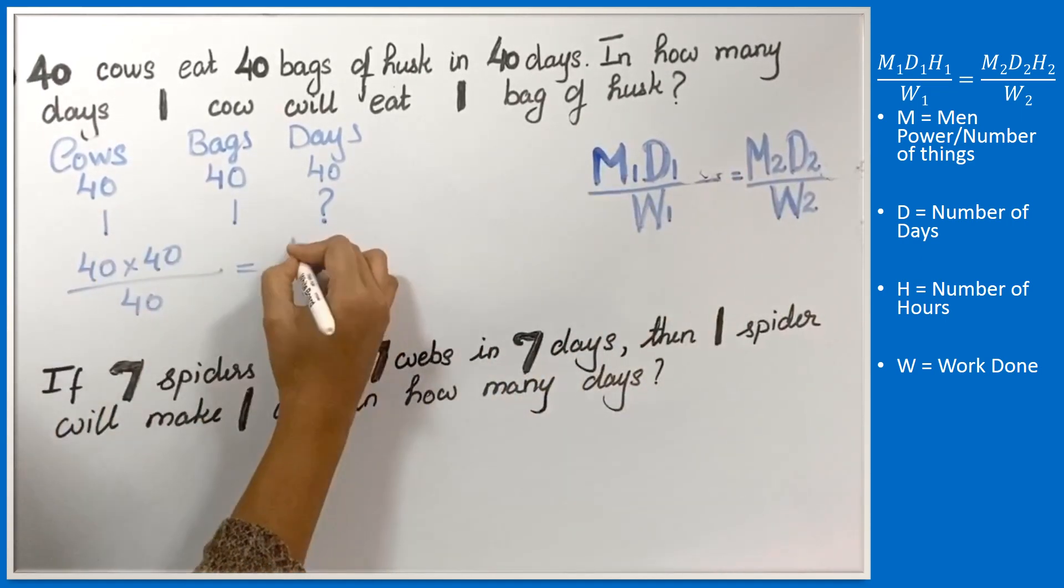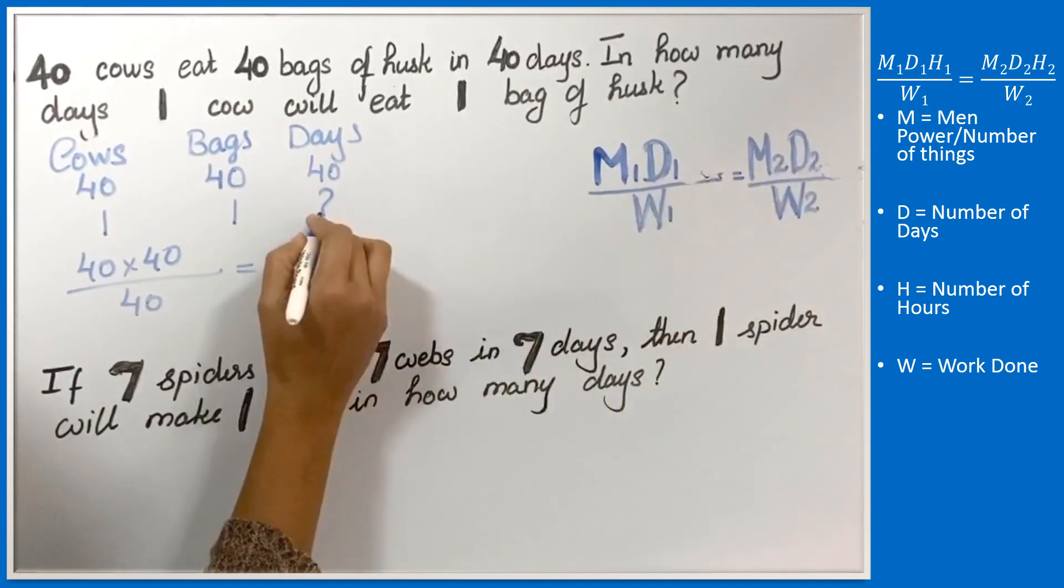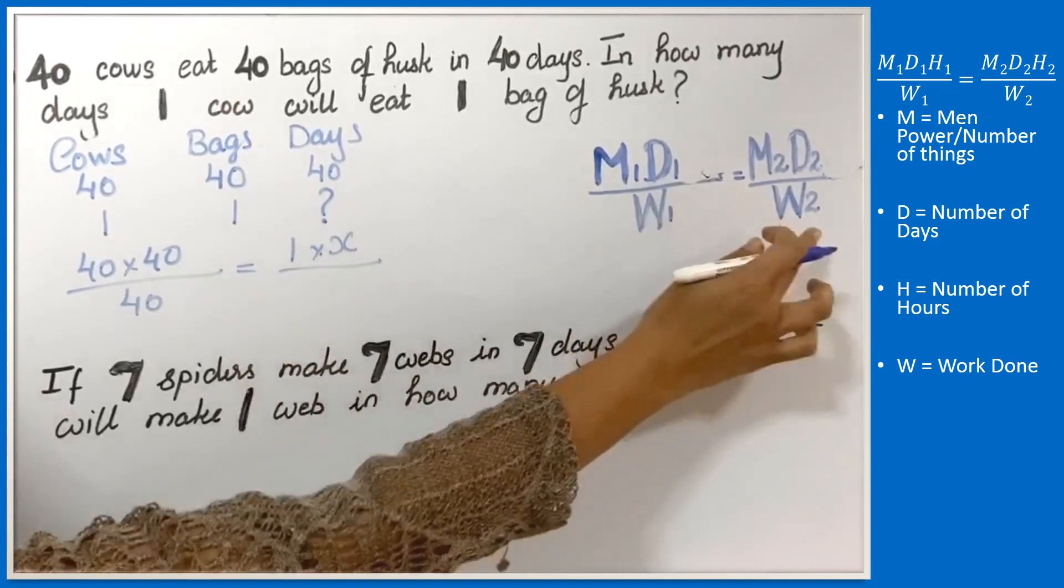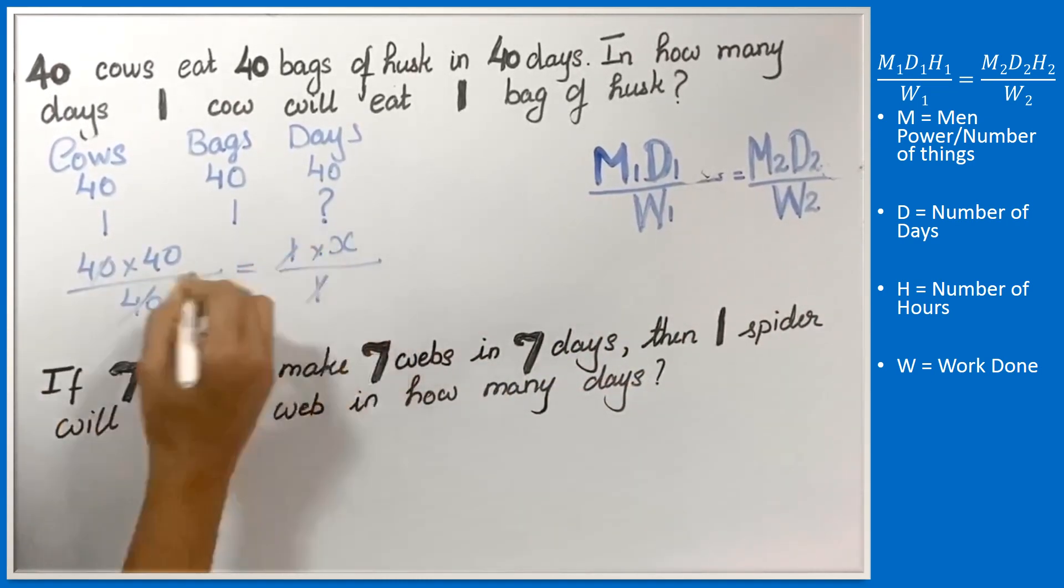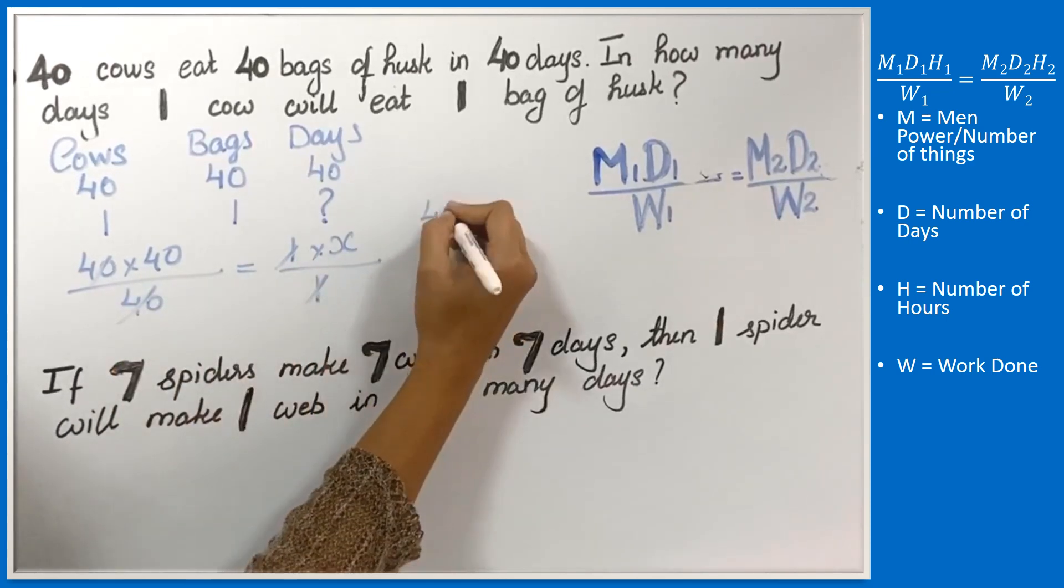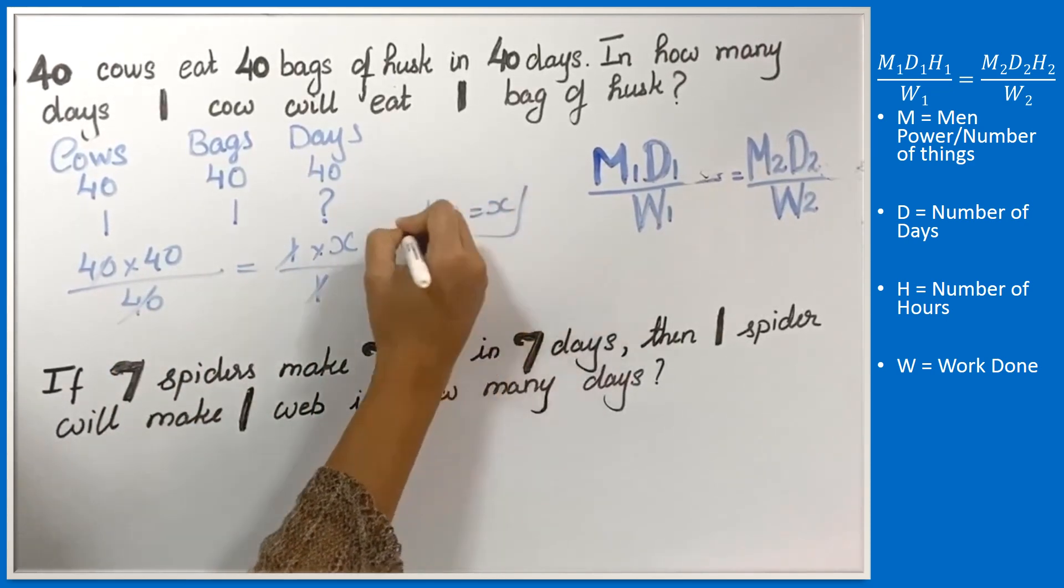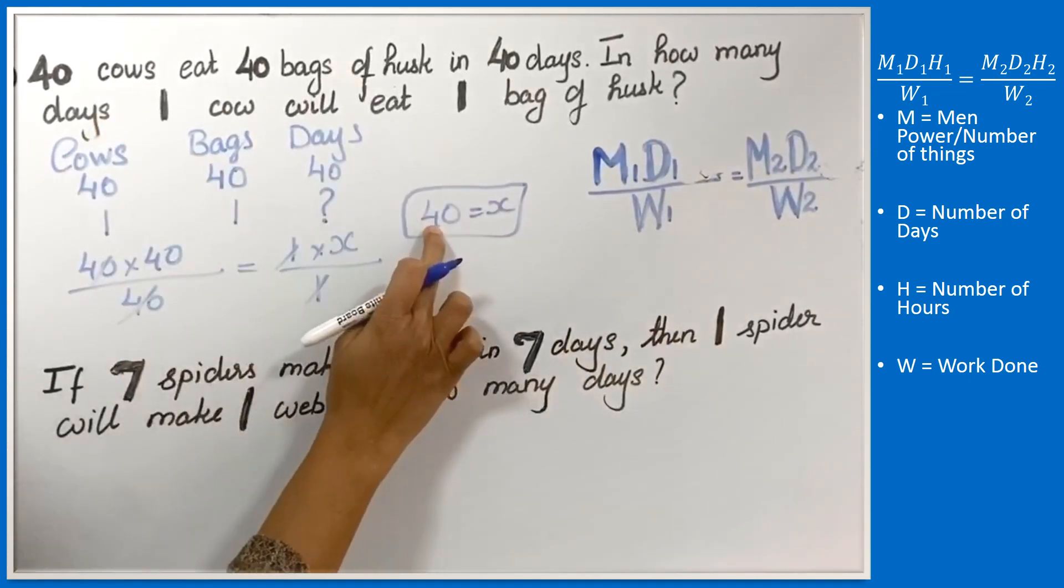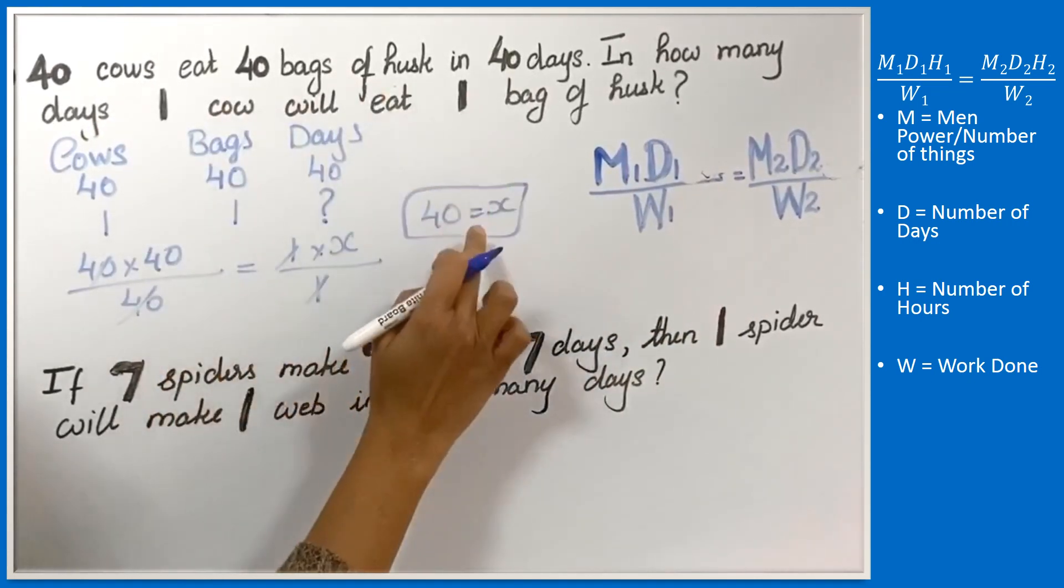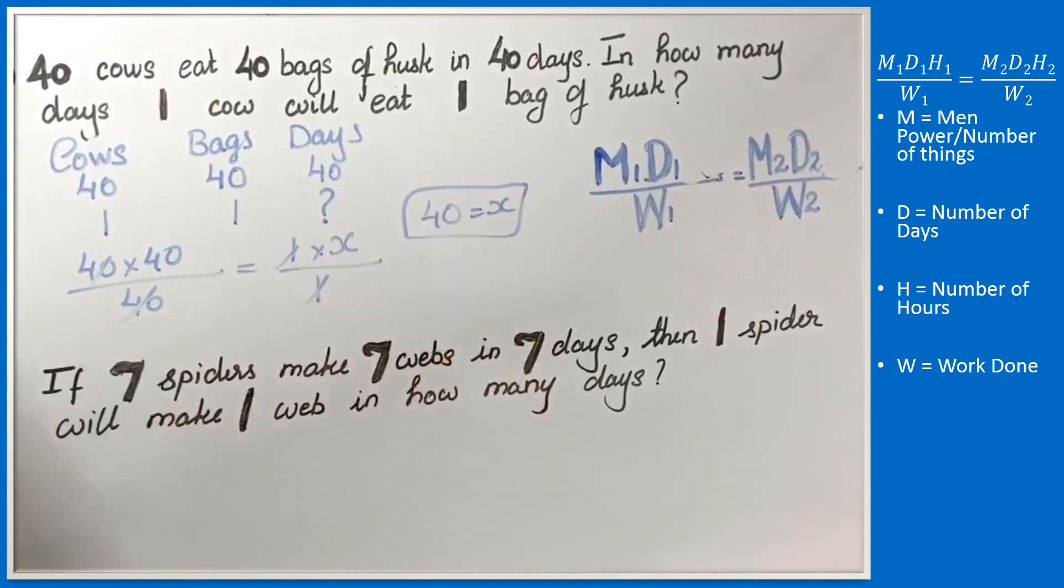Then M2 is the number of cows 1. D2 is unknown, so let's take it as X. W2 is the number of bags it eats - 1. X cancels, so 40 equals X. We got the answer. In 40 days, 1 cow will eat 1 bag of husk. Now using the same formula, can you try this question?